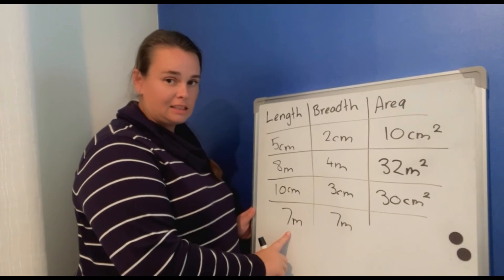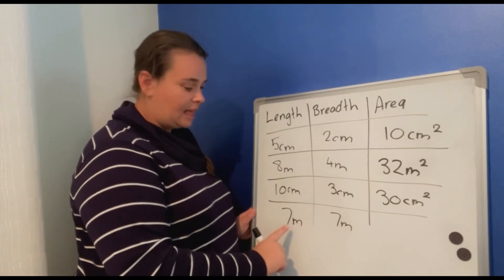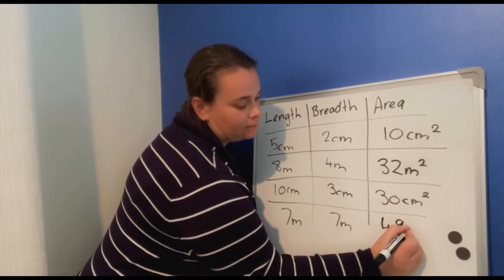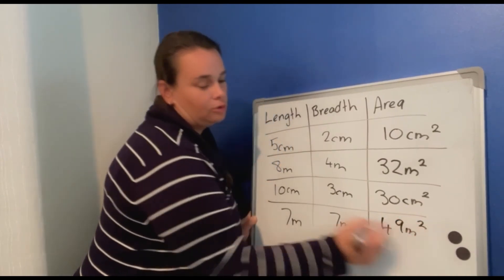Seven meters and seven meters. Seven and seven is forty-nine meters, and the little two.